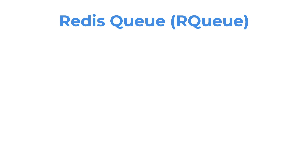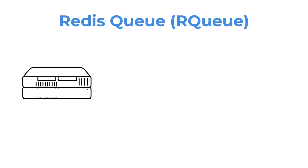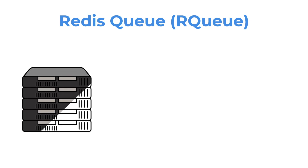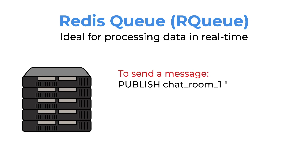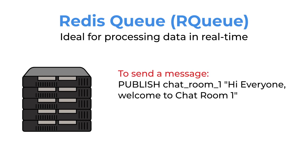Redis is an in-memory data store that can be used as a high-performance key-value store or as a message broker. It has no persistency but dumps its memory into a disk or database. In addition, it is ideal for processing data in real-time. We use commands to perform actions, such as to send a message and to receive a message.